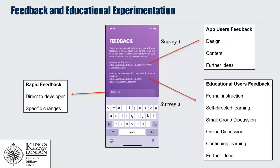The feedback page covers three types of feedback: a survey for app users with a link to that; a survey for educators with a link to that, including an option for educators to describe the types of educational scenario they used; and finally a rapid feedback free-text option to provide information direct to the developer for specific changes.